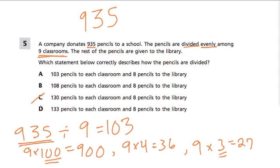So C and D — and eight — are out as well. The only practical answer is 103. That's the most you can give to each classroom, because then there are only eight pencils left over, and we can't distribute eight pencils to nine classrooms. So that's the eight extra pencils going to the library.